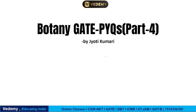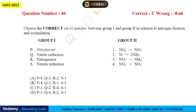This is PYQ part 4 from the GATE Botany portion. The next question asks to choose the correct set of matches between group 1 and group 2 in relation to nitrogen fixation and assimilation. You have to select the correct option identifying which specific group of organisms is responsible for each reaction. The options are Nitrobacter, Nitrite Reductase, Nitrogenase, and Nitrate Reductase.